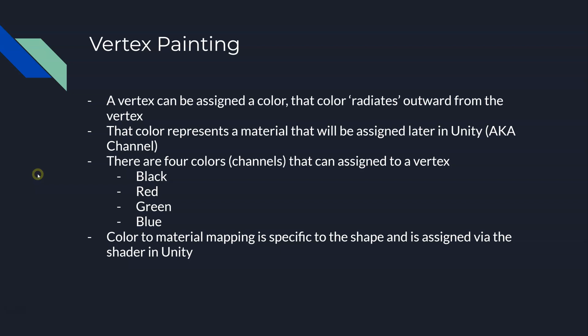Color-to-material mapping is specific to the shape and is assigned via the shader in Unity. We only have four different channels, which means the red channel when assigned to a fairway can be a different material than the red channel assigned to a bunker or a rough. The red channel on a fairway might represent the fairway material in Unity; the red channel inside a rough is going to represent the rough material. It's specific to that shape. So no matter what you paint something in Inkscape, you can change that material later on in Unity.